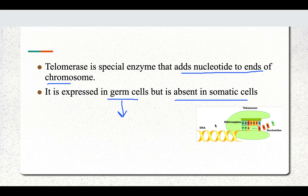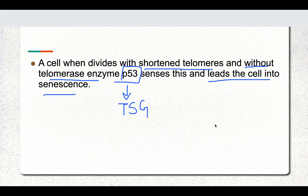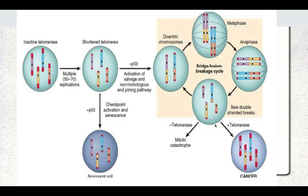Telomerase is absent in somatic cells but present in germ cells. When a cell divides with shortened telomeres and without telomerase in a normal human being, P53 — a tumor suppressor gene — senses this and leads the cell into senescence. Normally, with inactive telomerase there are 50 to 70 replications. Because of replication, as shown in this diagram, the red part representing the telomere becomes shortened. P53 senses it and sends the cell into senescence.